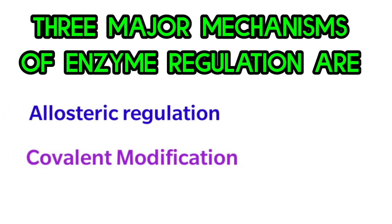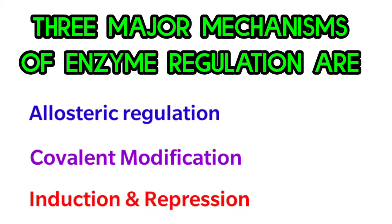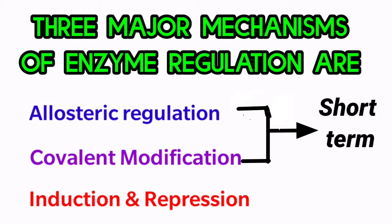The major mechanisms involved in the regulation of enzyme activity are: allosteric regulation, covalent modification, and induction and repression. Among these three, allosteric regulation and covalent modification are short-term regulations, whereas induction and repression is a long-term regulation.